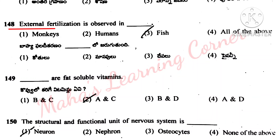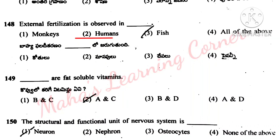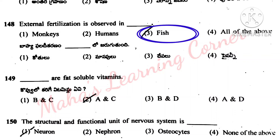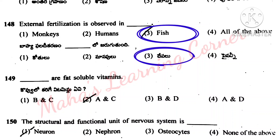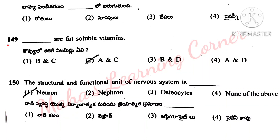External fertilization is observed in: monkeys, humans, fish, all of the above. Correct answer option 3: fish.